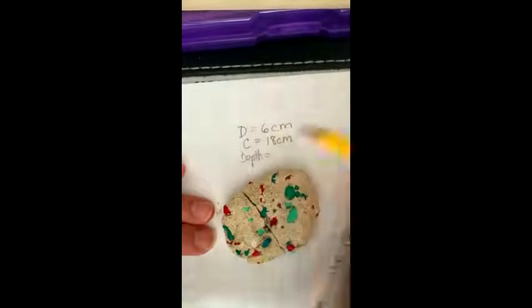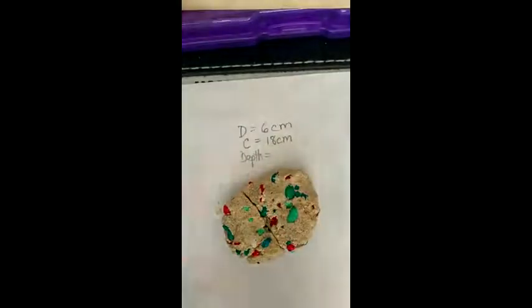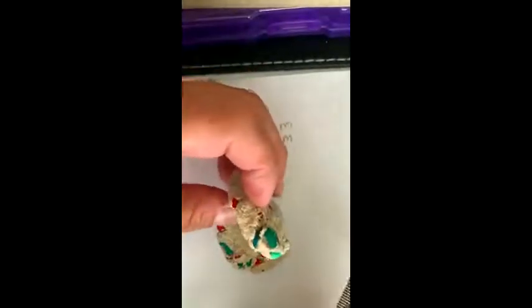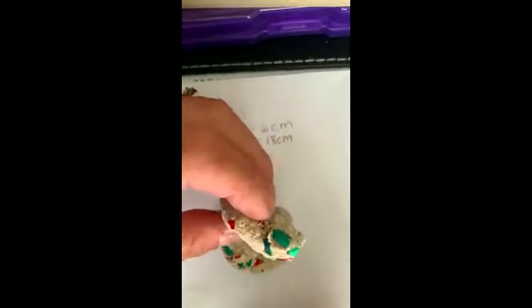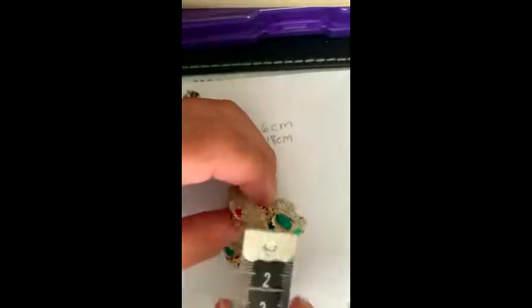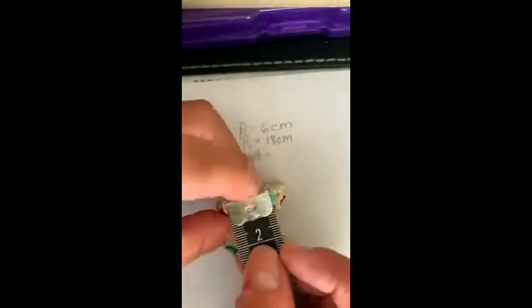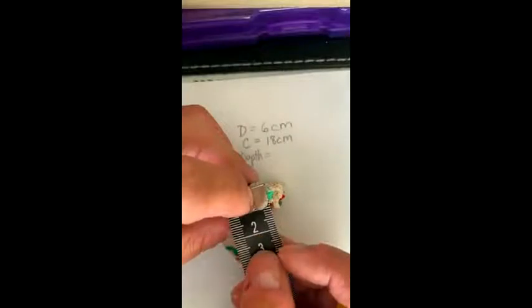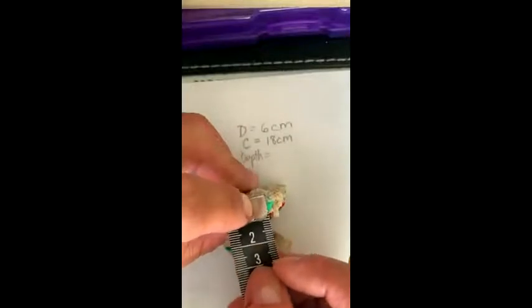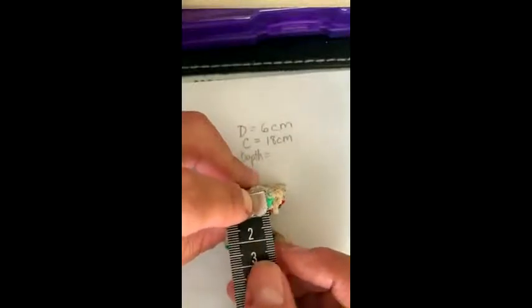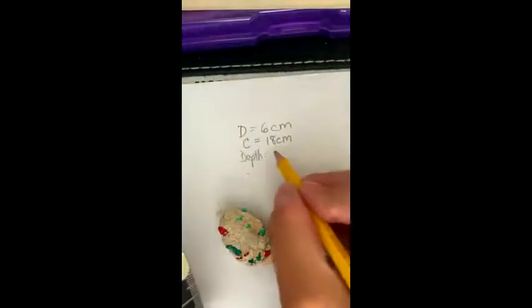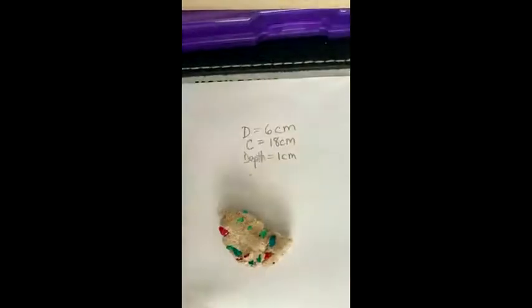Then for the depth — I'll actually write that word out so we don't get confused. I'm going to take a piece of the mock rock right here and again use the centimeters. The depth is probably about one centimeter, so I'm going to say one centimeter.